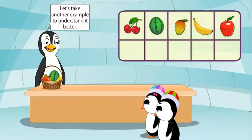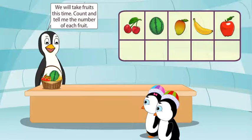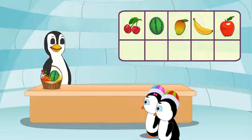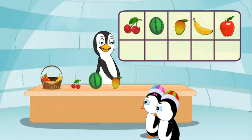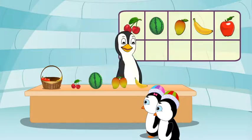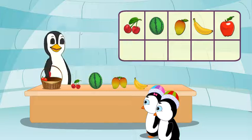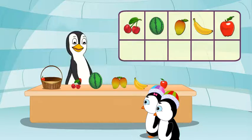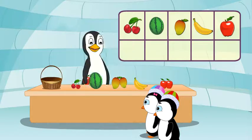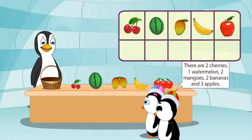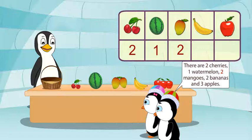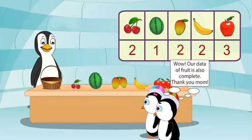Let's take another example to understand it better. We will take fruits this time. Count and tell me the number of each fruit. There are two cherries, one watermelon, two mangoes, two bananas and three apples. Wow! Our data of fruit is also complete.